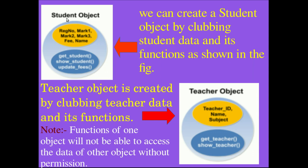Students have common properties. An object contains data and functions clubbed into a single unit. The teacher object has data such as ID, name, and subject taught. The functions for the teacher include get teacher input, teacher details input, and show teacher. This data and these functions are clubbed into a single unit called the teacher object. So an object is data plus its data access functions clubbed into a unit.